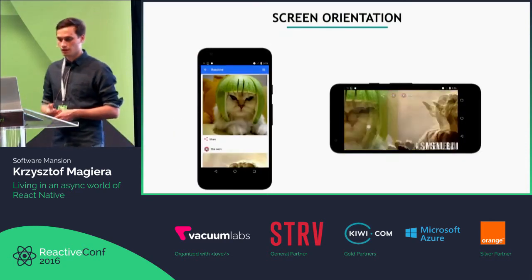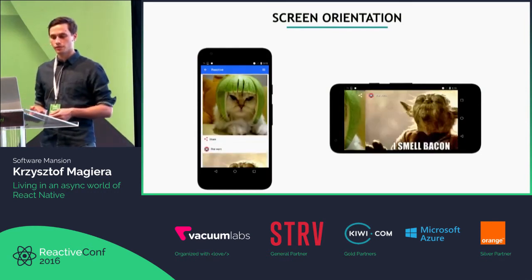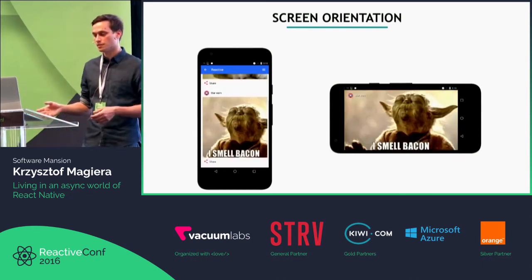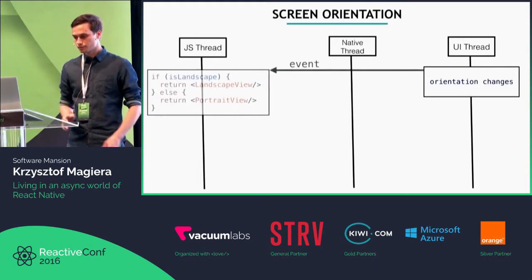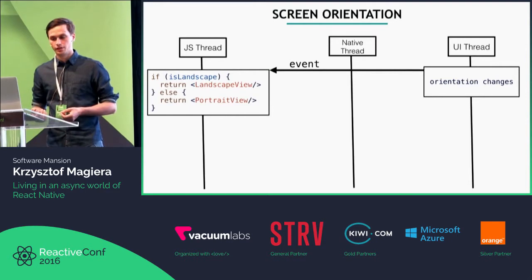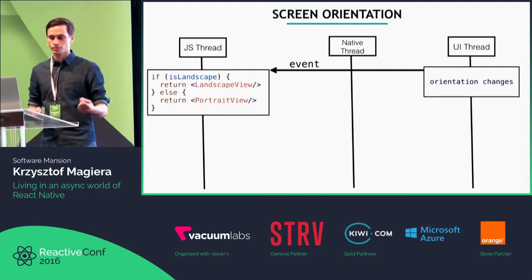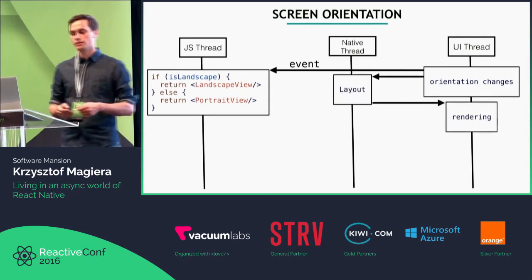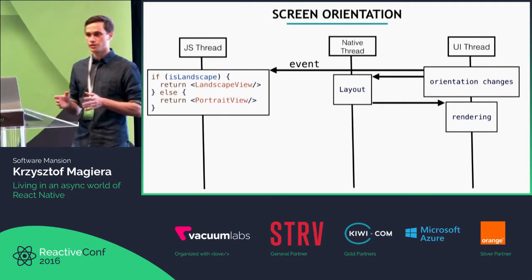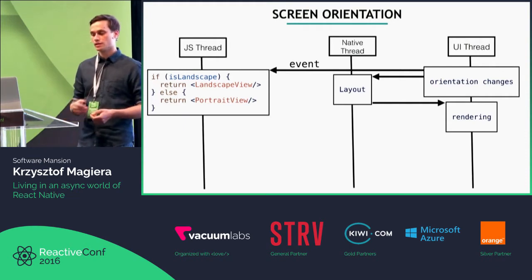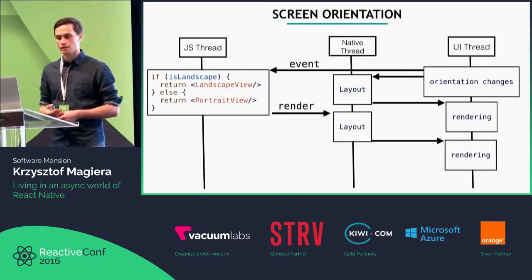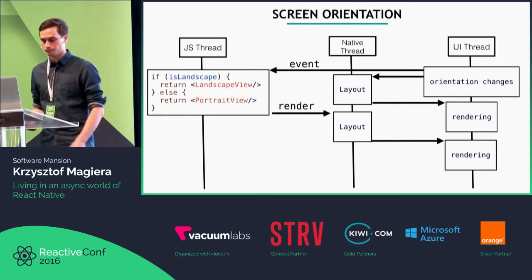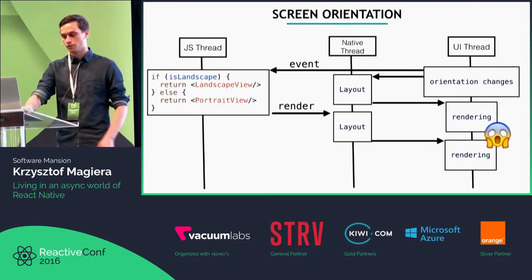But if you're trying to build a different experience depending on orientation — for example, one app with a list in portrait and a view pager with full-screen pictures in landscape — you might get into trouble. When the orientation change comes to the UI thread, we send the event to the JavaScript thread. Depending on whether orientation changed to landscape or portrait, we render the appropriate view. The problem is that the event is also sent to the native thread because the screen dimensions changed. So the native thread re-layouts and updates the UI, and then JavaScript sends additional UI updates, causing another layout pass.